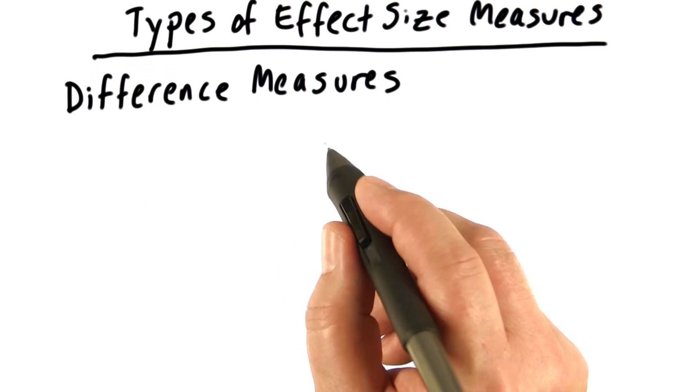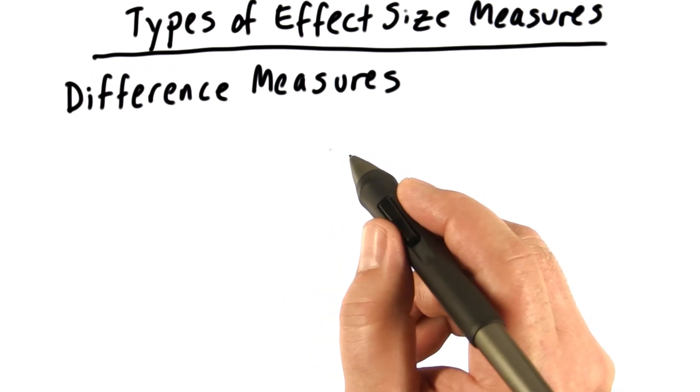The first we call difference measures. The easiest difference measure is one we've already talked about, the mean difference.